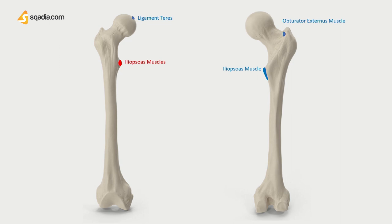The intertrochanteric line is the site of attachment for the iliofemoral ligament, the strongest ligament of the hip joint, serving as the anterior attachment of the hip joint capsule. There is a rounded tubercle on the superior half of the intertrochanteric crest called the quadrate tubercle, where the quadratus femoris muscle attaches.